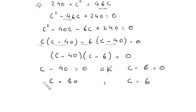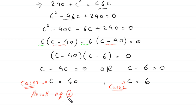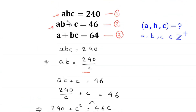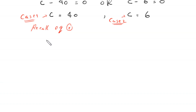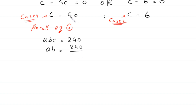It means we have two cases: Case 1 where C equals 40, and Case 2 where C equals 6. First, we solve Case 1. In this case, we have C equals 40. To find the values of A and B, we recall equation 1: A times B times C equals 240. So A times B equals 240 divided by C, which is 240 divided by 40, giving A times B equals 6.